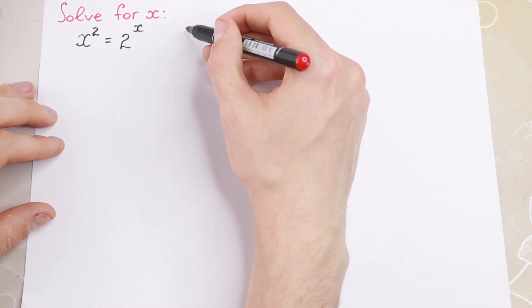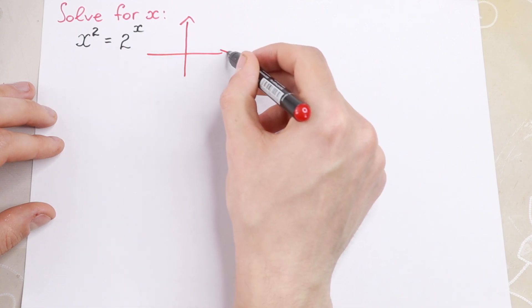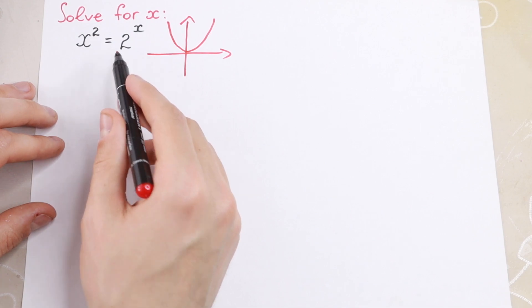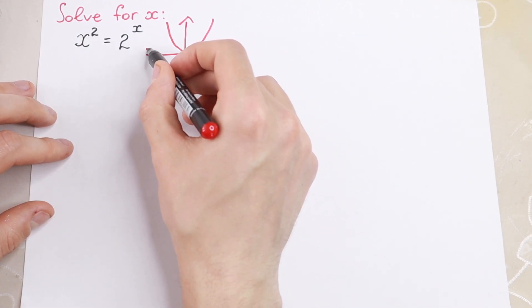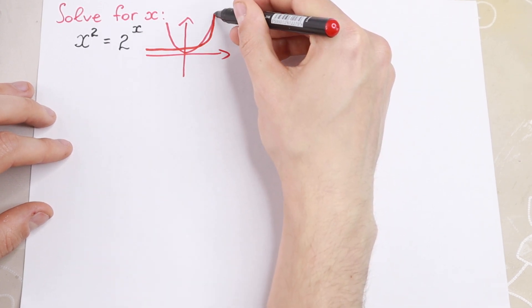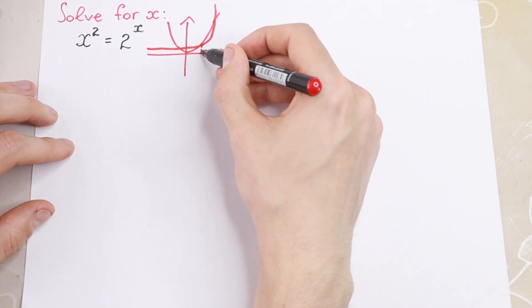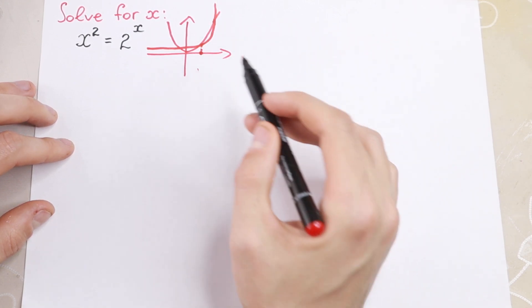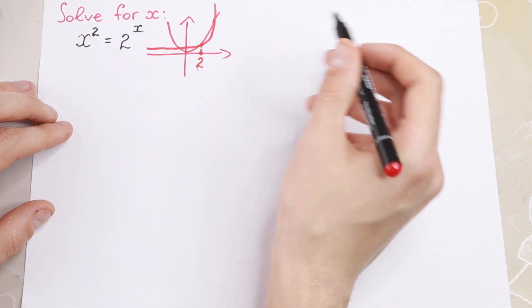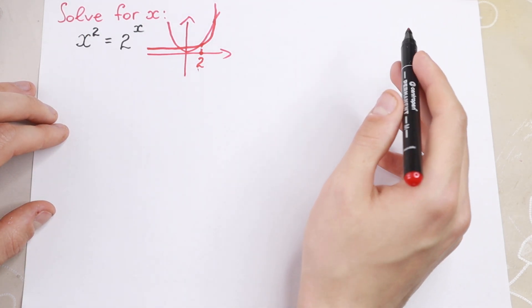But then I drew a graph. If we draw a graph of x squared, we'll have a parabola. And if we draw the second graph, 2 to the power x, we will have an exponential function. As you can see, right here we have one point of intersection — our first root. And it's not hard to see that this point is equal to 2, because we just proved that 2 squared equals 2 squared, which is correct.